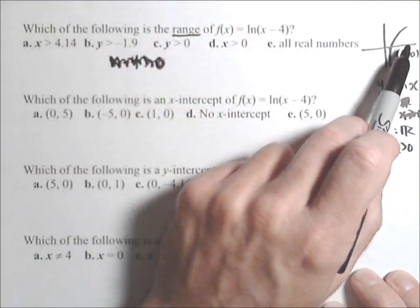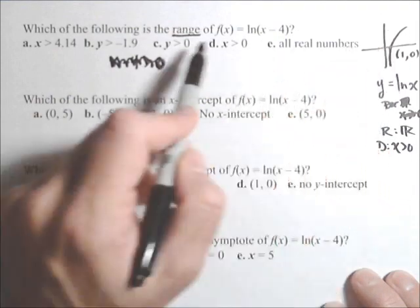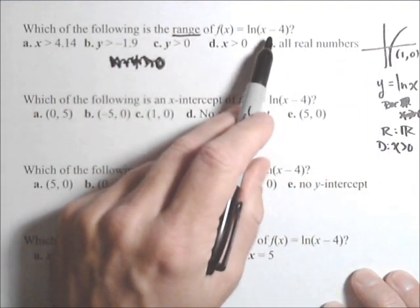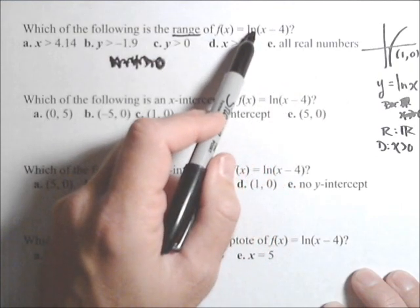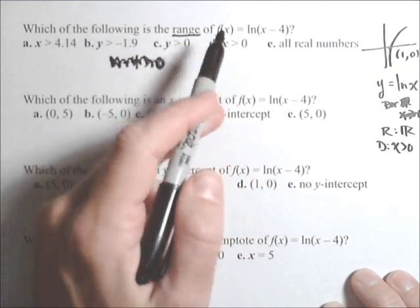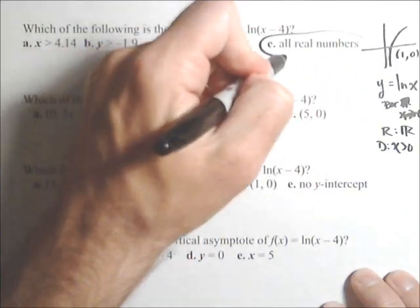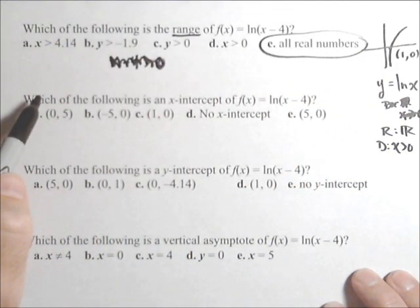Shifting it to the right 4 is not going to change the range. And the problem with this problem, or what can be tricky, is if you graph this, you don't really see it. In general, the graph of a natural log or a log has a range of all real numbers. So, shifting it to the right is not going to change that.